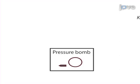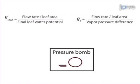This will enable us to calculate K leaf by dividing the flow rate by the water potential driving force. The stomatal conductance can be obtained by dividing the flow rate by the vapor pressure difference between the leaf and air near the leaf.